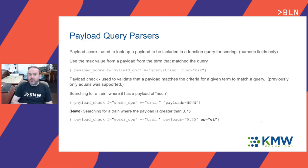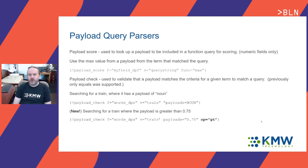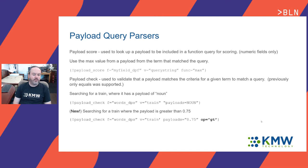A quick review of the Solr query parsers that support this. The first one, which we won't be talking about much today, is the payload score query parser, which allows you to use payload information as part of your relevancy or scoring calculation. More interesting was the payload check query parser, which can make a determination to match a particular term in a document if the payload equals a particular value — useful for part-of-speech searching, like searching for the word 'train' only if it had been tagged as a noun versus a verb.